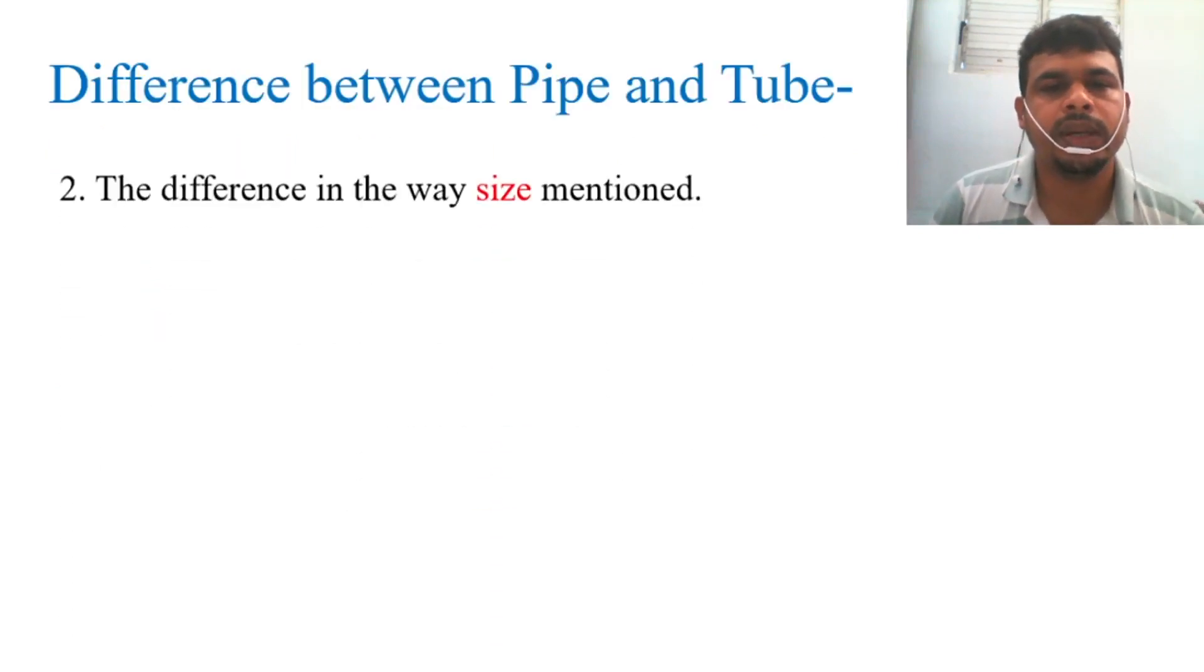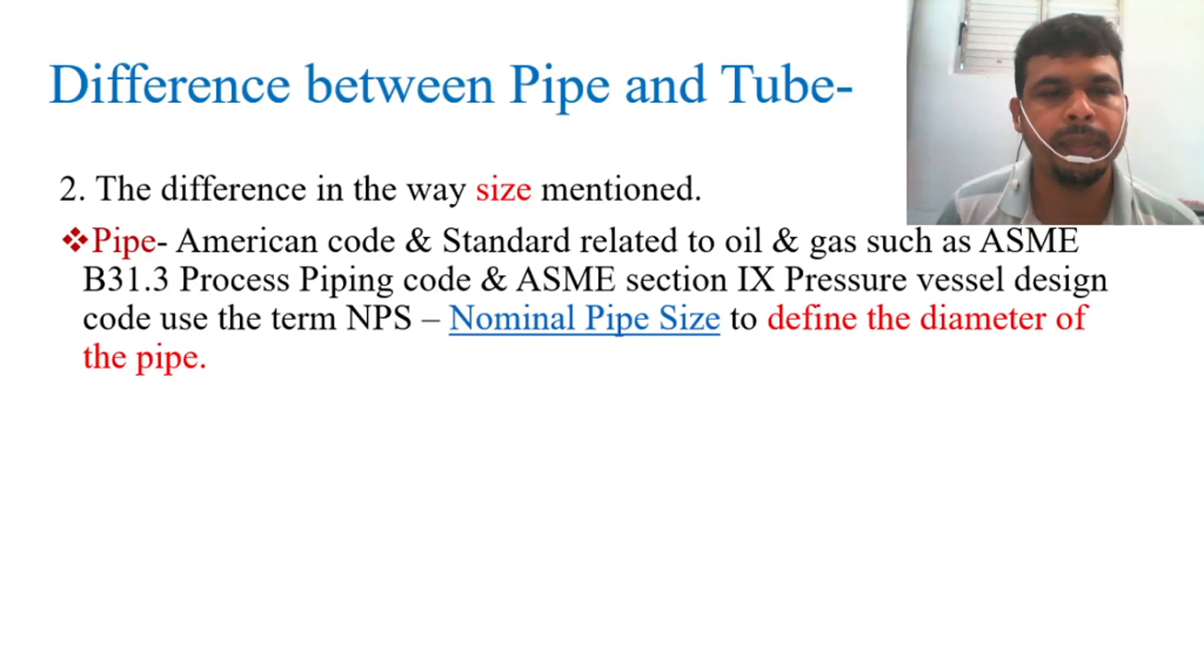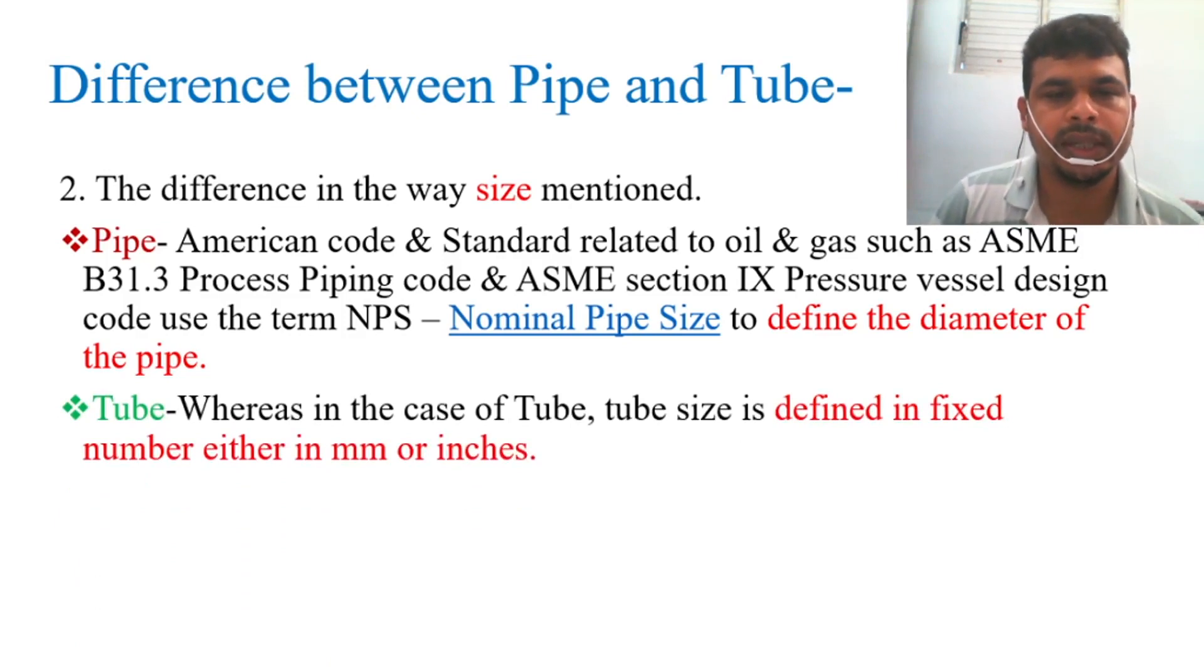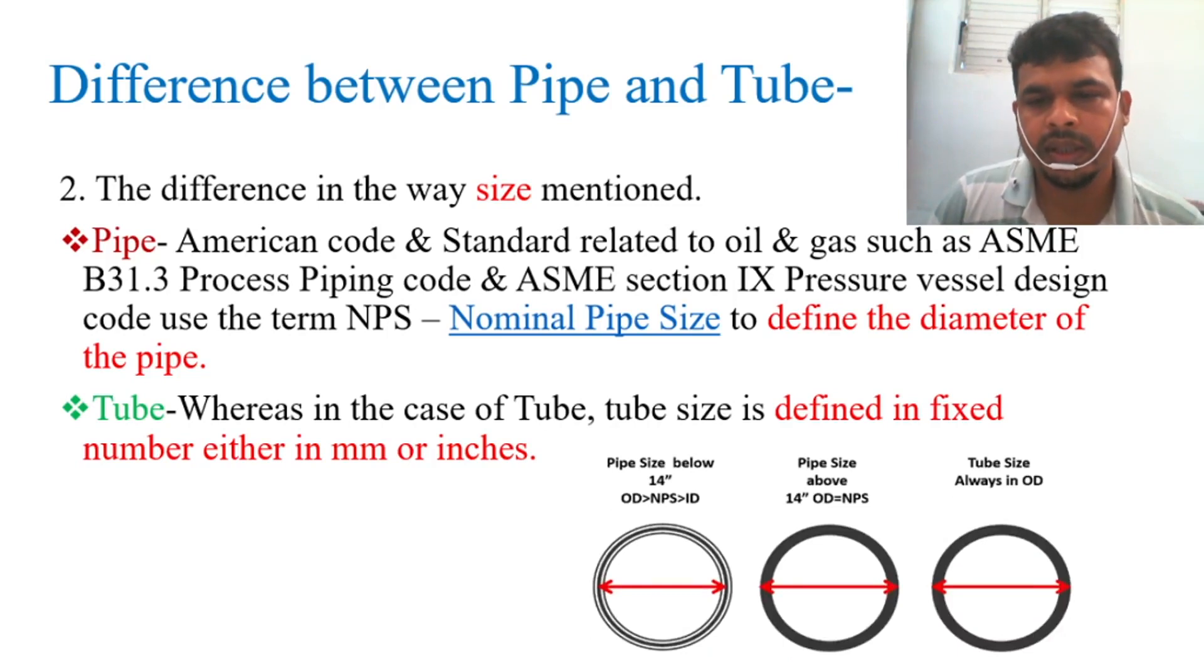Let's see what is the difference in the way size is mentioned. For pipe: American codes and standards related to oil and gas, such as ASME B31.3 Process Piping Code and ASME Section 9 Pressure Vessel Design Code, use the term NPS to define the diameter of pipe. So pipe size is defined in fixed numbers either in mm or inches. You can see in the picture the pipe size and tube size. I will discuss these details later.